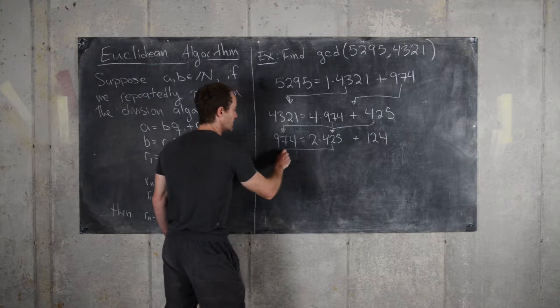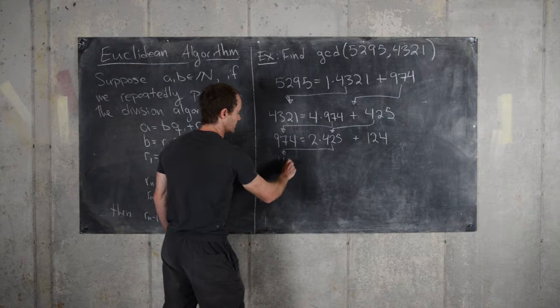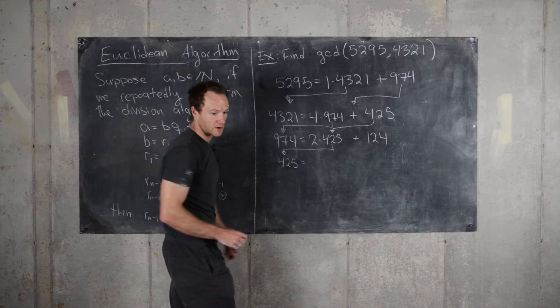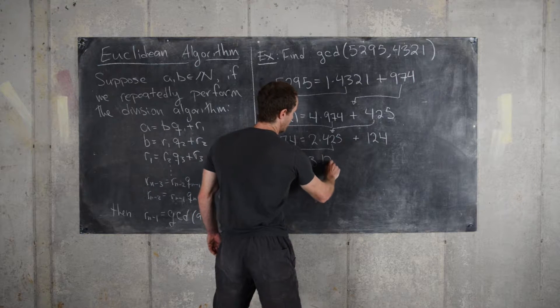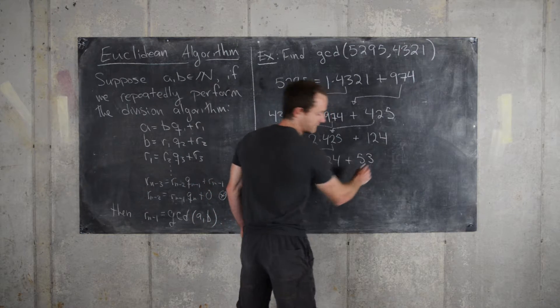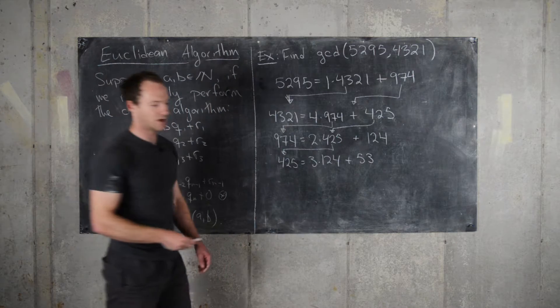So let's move 425 down. And so let's see, that's 3 times 124 plus 53.